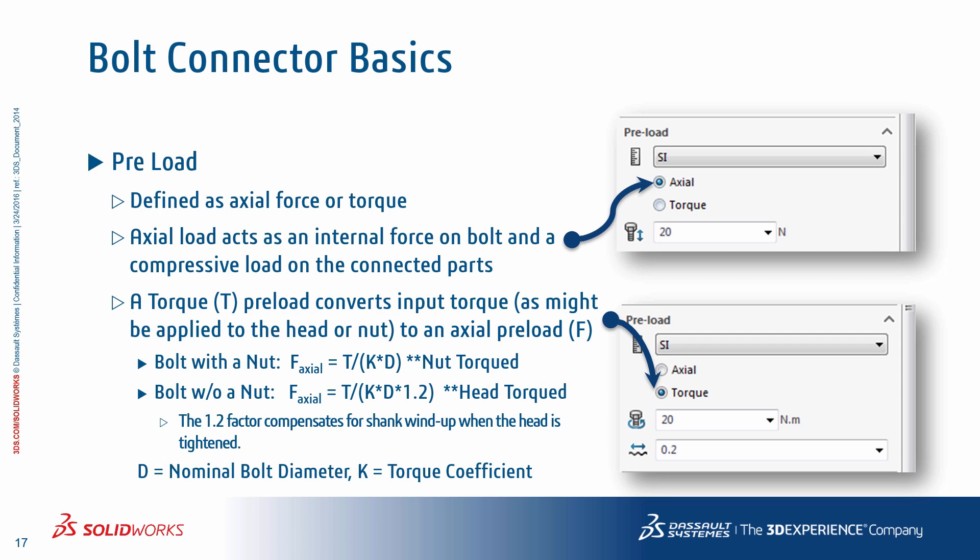These calculations can be found in many references, some of which are listed at the end of the presentation. Using the equations shown, the axial force is calculated. K is the torque coefficient or friction coefficient defined in the interface. These calculations are used as standard means of estimating preload as best as we can, knowing that there are a lot of things that can cause the preload calculations to be off. Bottom line: these are just estimates and ballpark numbers when it comes to number crunching for preloads.